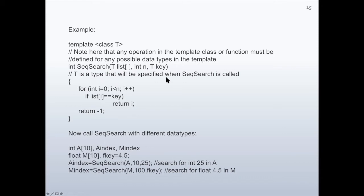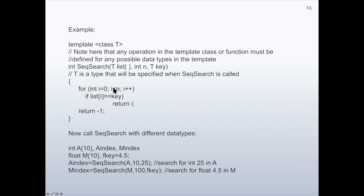T is a type that will be specified when sequential search is called. In the function, we have a for loop: for integer i starting from 0, it will repeat while i is less than n, and in each turn the value of i will be incremented by 1. We compare list[i] with key. If list[i] equals key, the location i where the key is stored is returned. If the loop repeats n times without a match, it returns minus 1.